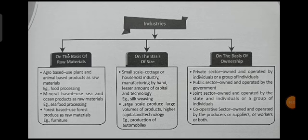Good evening everyone. Today we are going to discuss our chapter on geography, that is Industry. You very well know about industry. We will cover: first, types of industry on the basis of raw materials; second, on the basis of size; third, on the basis of ownership. Industry is that area where we manufacture things, like iron and steel, information technology, agro-based industry, and mineral-based industry.